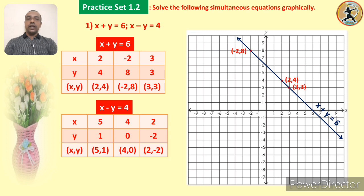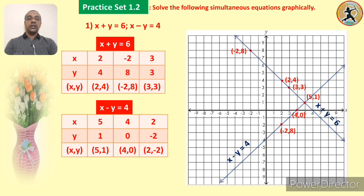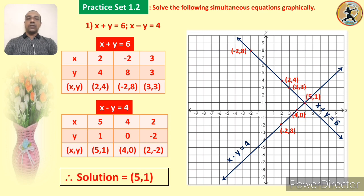By the same method we plot the three points for the equation x minus y is equal to 4: points (5, 1), (4, 0), and (2, -2). We draw a line passing through these three points — this is the graph of x minus y is equal to 4. Now look at the point of intersection of these two graphs, which is the point (5, 1). This point of intersection is the solution of these two simultaneous equations, found by the graphical method.